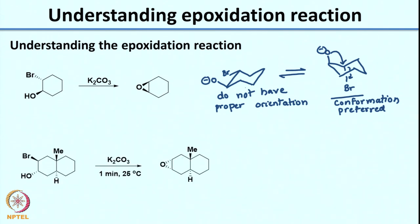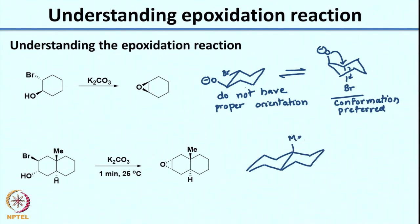So the product actually goes via this particular conformation. Now looking at the energies: this conformation is actually more preferred because you have the two groups in diequatorial positions. However, the product is actually formed from the di-axial conformer because the energy of the transition state in this anti-periplanar orientation is much lower than the energy of the transition state from the major conformer. Here is another transdecaline example where ME is axial going up, Br is axial coming up, and OH is axial coming down. Once deprotonated, it has a very nice anti-periplanar orientation to give you the epoxide.